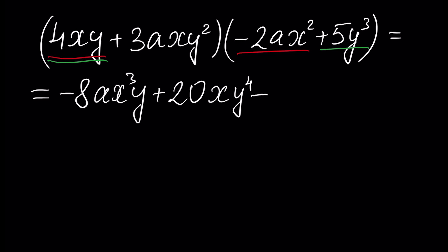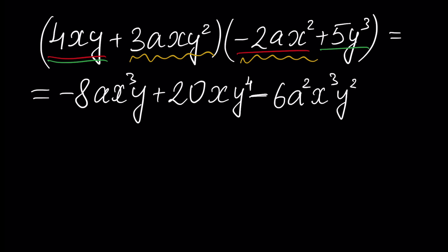Next, multiplying the second monomial 3axy squared by minus 2ax squared: 3 times minus 2 is minus 6, a times a is a squared, x times x squared is x cubed, and y squared remains — giving minus 6a squared x cubed y squared. Then multiplying 3axy squared by 5y cubed gives plus 15ax times y to the power 5.